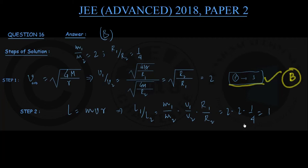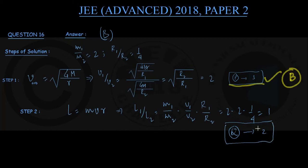That shows element Q in list 1 corresponds to element 2 in list 2. Checking our choice of option B once again, it is correct because in option B only, Q corresponds to 2. So we are on the right path. That is step number 2.